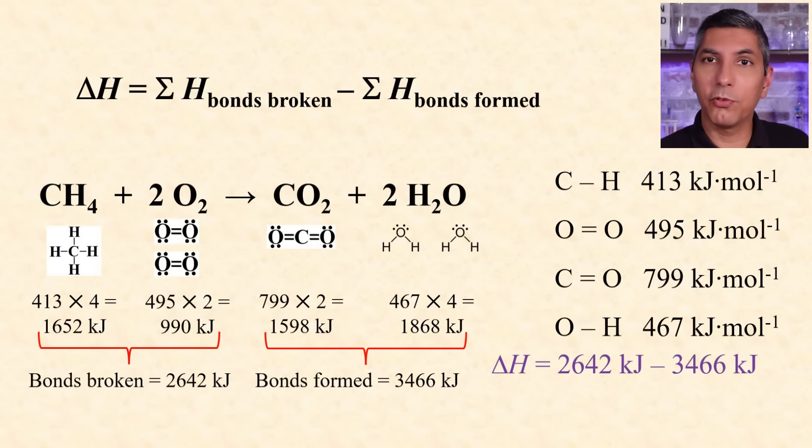So subtract bonds broken minus bonds formed and you get the total change of enthalpy as negative 824 kilojoules. Sometimes there is a variation of this problem where you're given the total delta H and all of the bond energies except for one and you have to use algebra to solve for the missing bond energy.